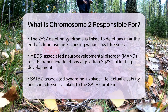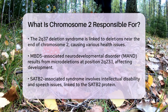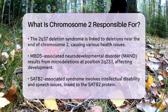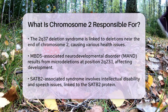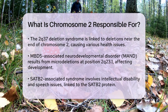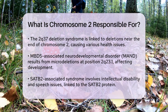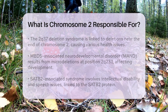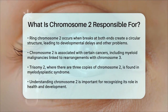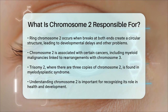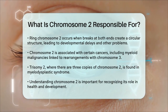In addition to these conditions, changes in chromosome 2 can lead to other abnormalities, such as ring chromosome 2, where breaks at both ends of the chromosome form a circular structure. This can result in developmental delay, small head size, slow growth, and heart defects.